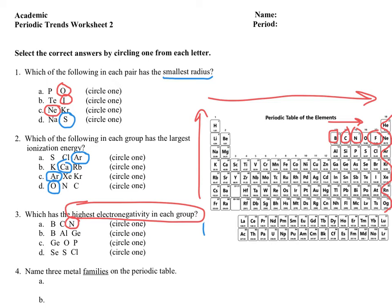Remember, the smaller the atom, the more the atom wants to hold on to its electrons — that's why electronegativity increases as atom size decreases. For boron, aluminum, and germanium: even though germanium is further to the right, boron has two fewer energy levels, so its electrons are much closer to the nucleus. The nucleus holds on to those electrons tightly, and outside electrons are pulled closer. So boron is definitely more electronegative.